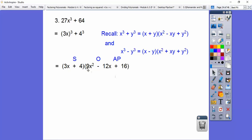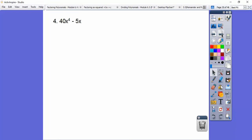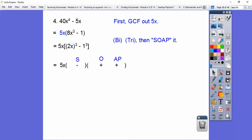GCF out of 5x, so we pull the 5x out. And then you've got to recognize this is 2x quantity cubed. 2³ is 8. x³ is x³. So this is the quantity 2x cubed. One's a perfect square. It's a perfect cube. So it's got 1³ right there. And then we do bi times tri.